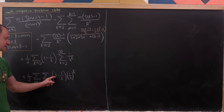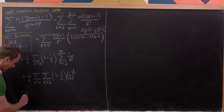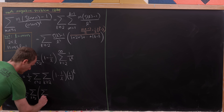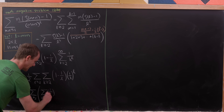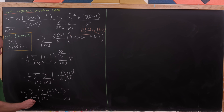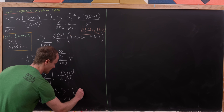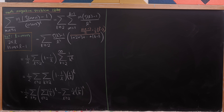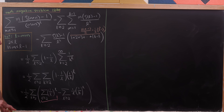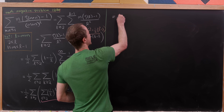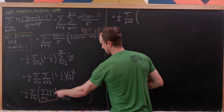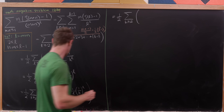Changing order of summation and multiplying through gives us one half times the sum as k is bigger than or equal to 2 of the sum over l bigger than or equal to 2 of 1 over k to the l, minus the sum as l is bigger than or equal to 2 of 1 over l times 1 over k to the l. The first underlined piece is a standard geometric series formula.